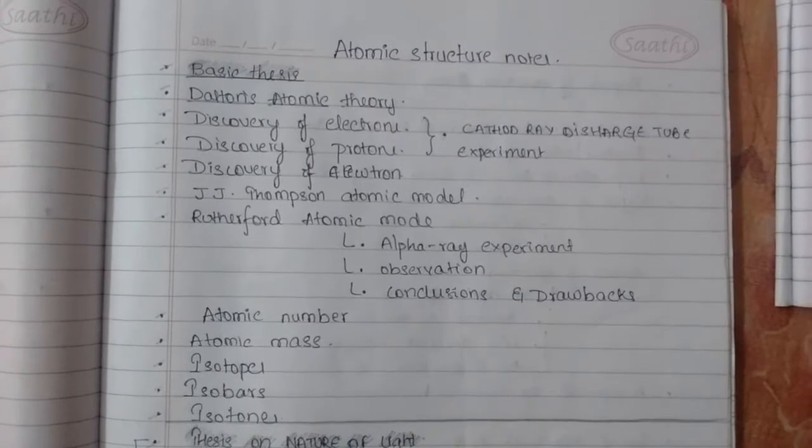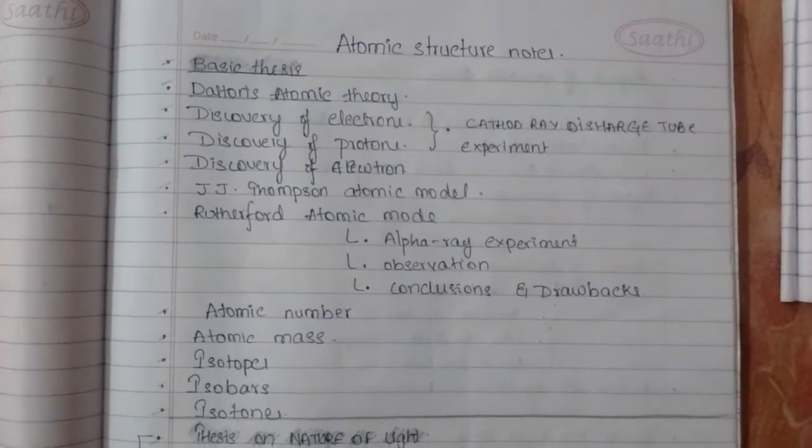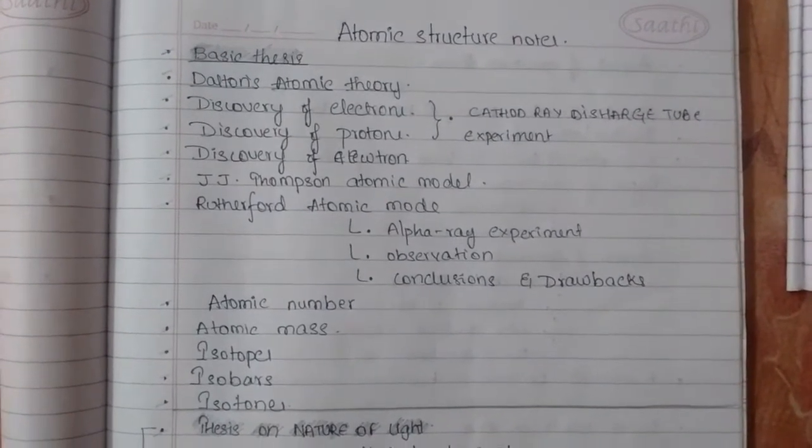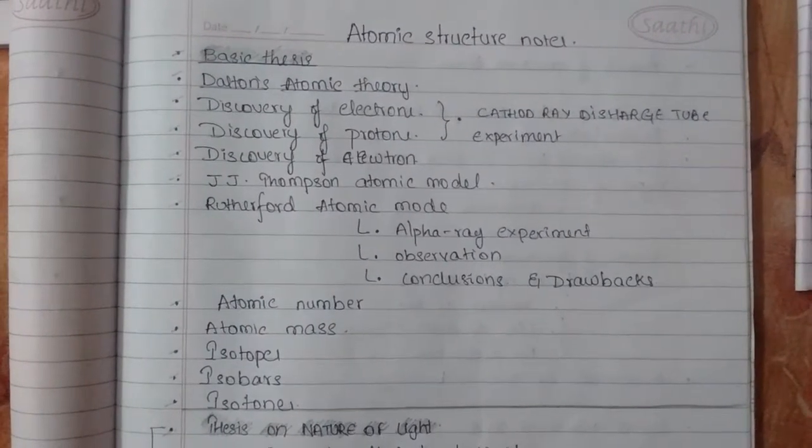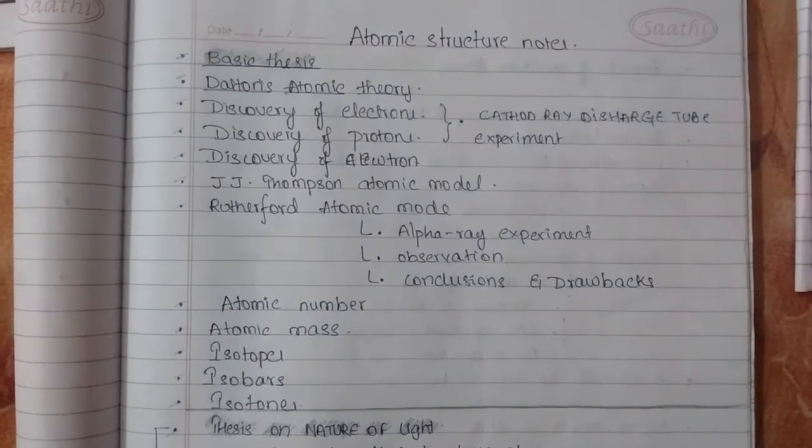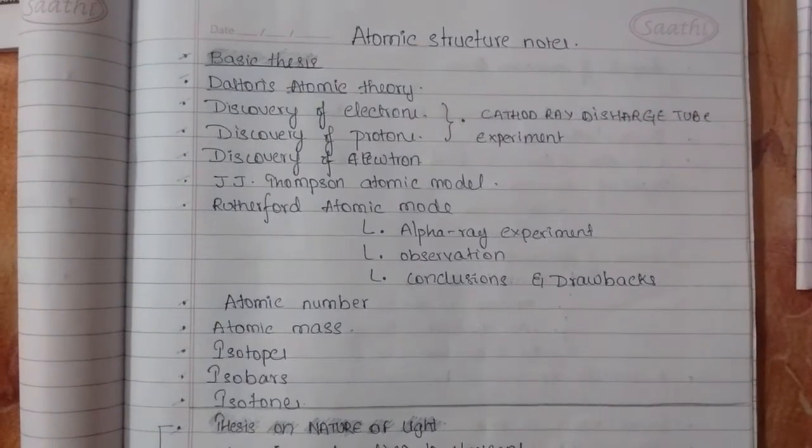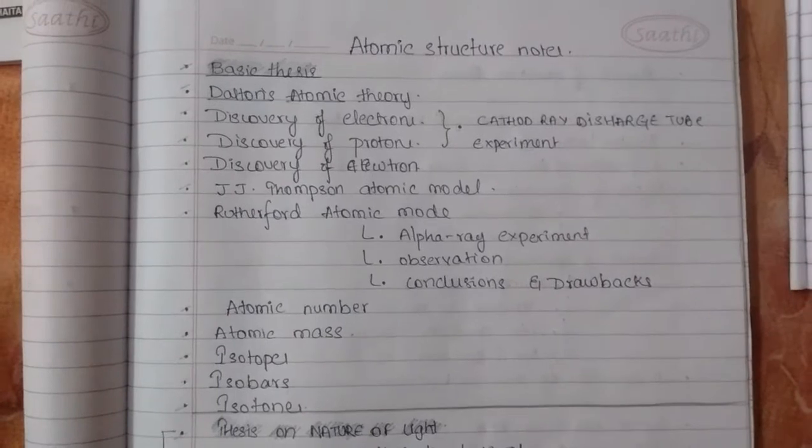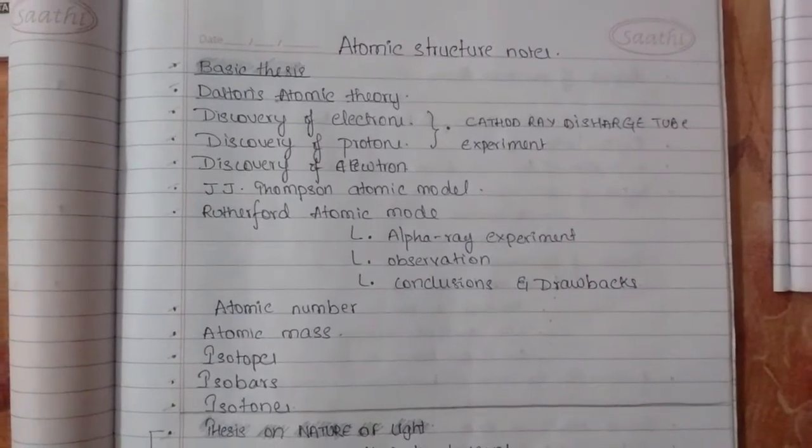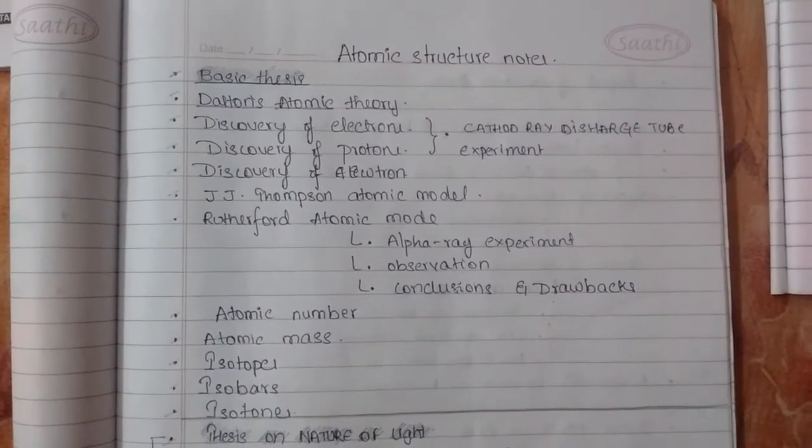Generally, atomic structure of an atom covers many topics like basic theory on atom, thesis on nature of light, aspects of quantum theory, Bohr's model of atom, partial waves of matter and de Broglie's theory, uncertainty principle and many more. Today, first, we'll basically learn about the basic thesis of atomic structure.